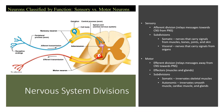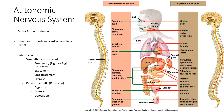So basically anything that is involuntary. The autonomic nervous system is an efferent division carrying a signal away from the CNS to the PNS. It innervates smooth and cardiac muscle as well as glands—anything that is involuntary.